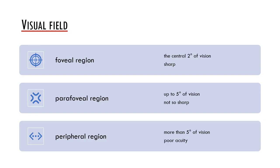However, it could play a role in reading. More than five degrees of visual angle are considered as peripheral region which may be useful for certain cognitive processes but not for reading.